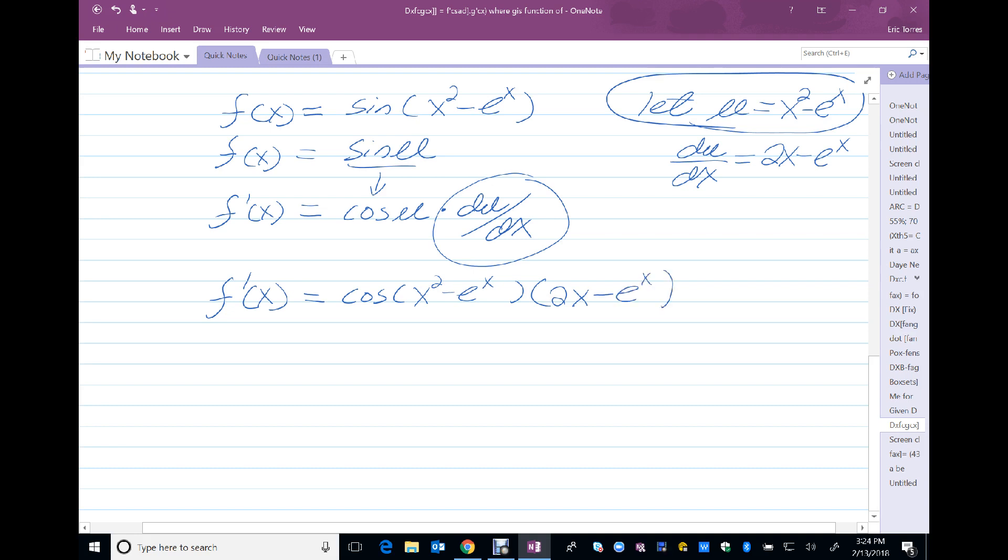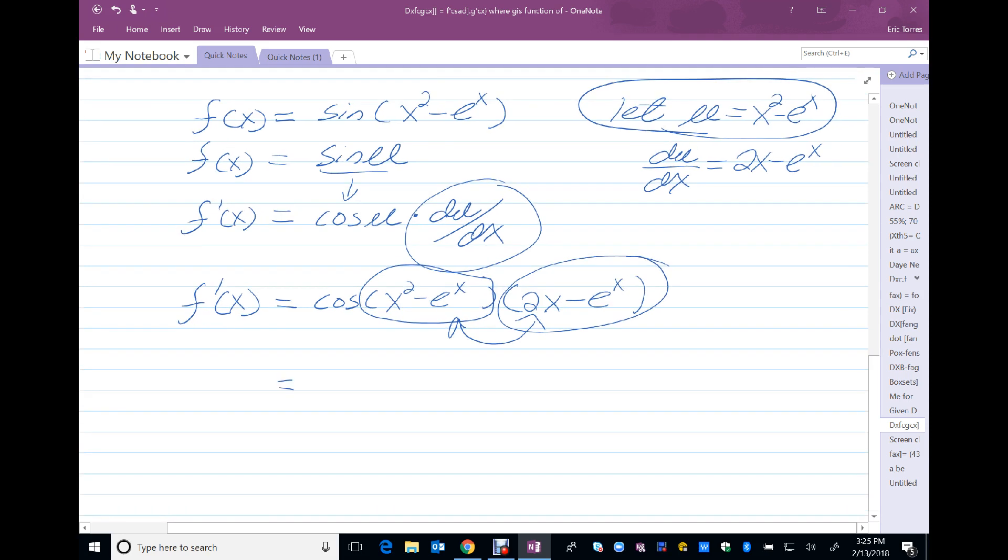Please be careful. You cannot clean these up together because this first component is inside the cosine. I'm taking the cosine of that. And the second component is outside, being multiplied. If it makes you feel a little bit better, you might want to write it this way.